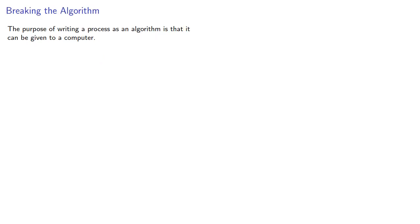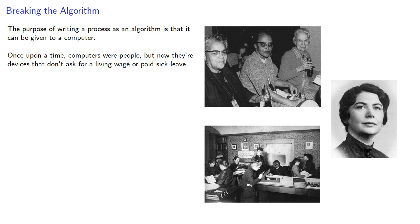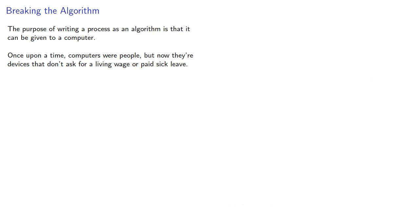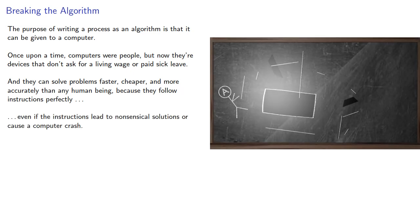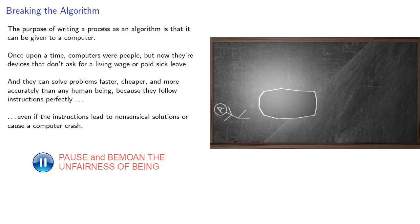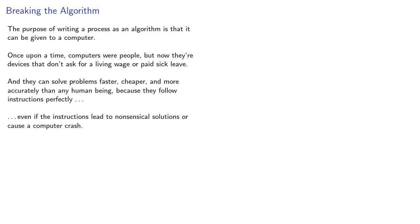Now remember, the purpose of writing a process as an algorithm is that it can be given to a computer. Once upon a time computers were people, but now they're devices that don't ask for a living wage or paid sick leave. And they can solve problems faster, cheaper, and more accurately than any human being because they follow instructions perfectly, even if the instructions lead to nonsensical solutions or cause a computer to crash. So we need to check for ways to break the algorithm, potential problems, and how to deal with them if they come up.